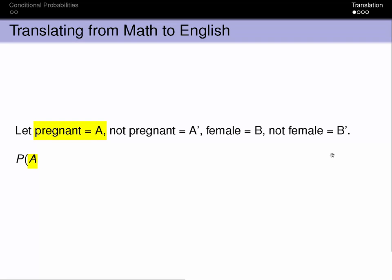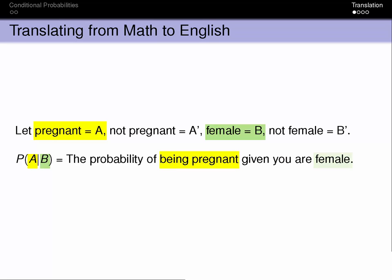So the probability of being pregnant, probability of A, given B, given that you're female, is equal to the probability of being pregnant given you're a female.